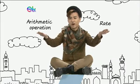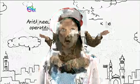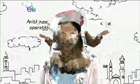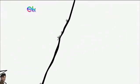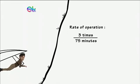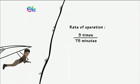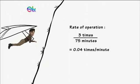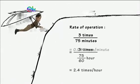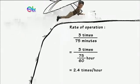Have you noticed that the rate is in fact an arithmetic operation? Yes, a rate is a comparison of two different kinds of quantities by division. Moreover, rates have units. For example, a glider can fly three times in 75 minutes. That is, the rate of operation of a glider is 0.04 times per minute or 2.4 times per hour.